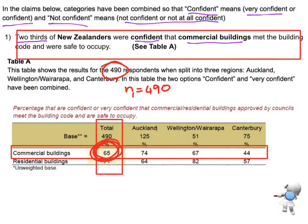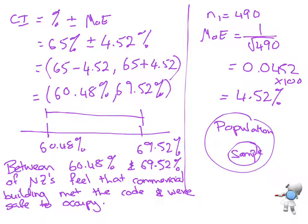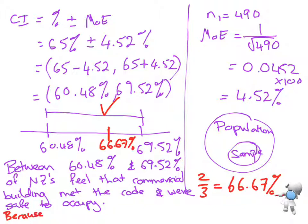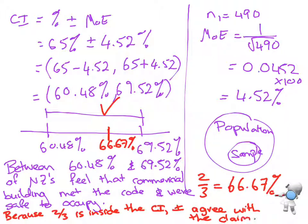Now we want to look at the claims. The claim was about two-thirds of those New Zealanders. So I'm going to look at my confidence interval and think, where is two-thirds? Well, two-thirds as a percentage is 66.67%. So I need to think, well, where is that on my number line? And so that is going to be around about here. So our 66.7% is within the confidence interval. Therefore, I agree with the claim. So that's going to be my last sentence. Because two-thirds is inside the confidence interval, I agree with the claim. And that's the answer.